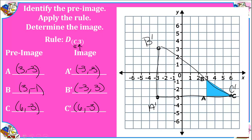When doing dilations we are creating similar images. ABC and A'B'C' are the same shape but different sizes. Everything was enlarged proportionately, meaning each side was multiplied by the same scale factor to create a similar shape.